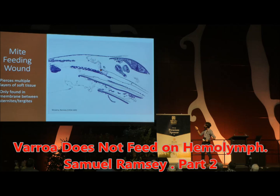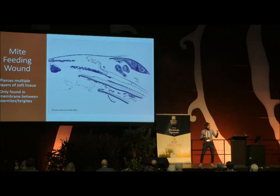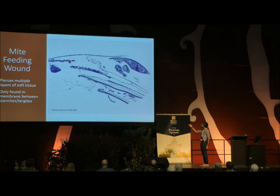We had to push it back a little bit in order to get the embedding media in there. And this is the membrane — a very, very thin membrane between all of those plates, called the intersegmental membrane. It is incredibly thin, and that is where the mites are actually piercing through the host. But what I really want you to focus on is this gooey stuff back here. Does anyone have any idea what this tissue might be?